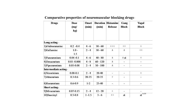Short-acting neuromuscular blocking drug: succinylcholine — dose 0.5 to 0.8 mg/kg, onset 1 to 1.5 minutes, duration 3 to 6 minutes, histamine release 2+, ganglion block present, vagal block present.